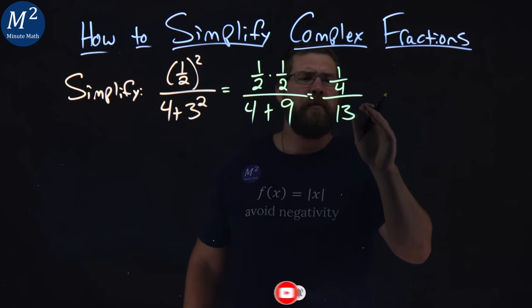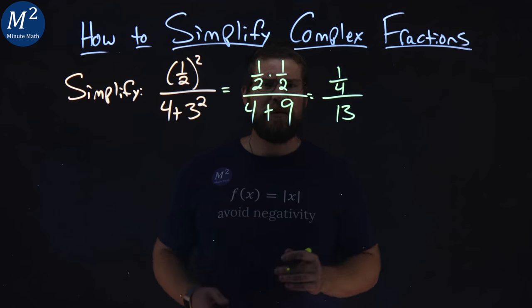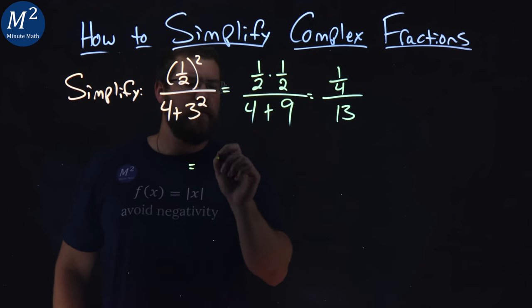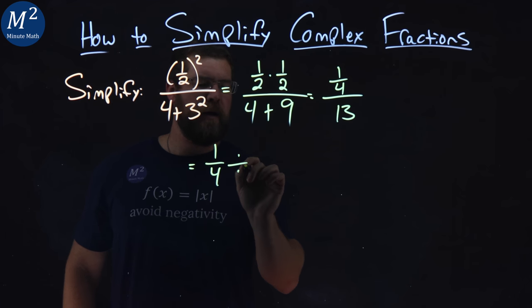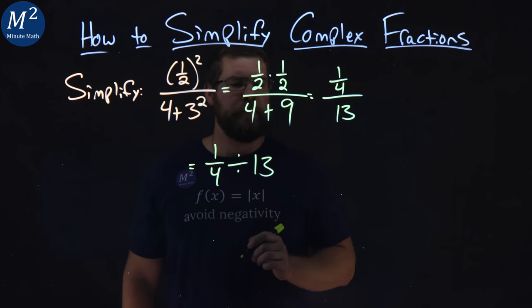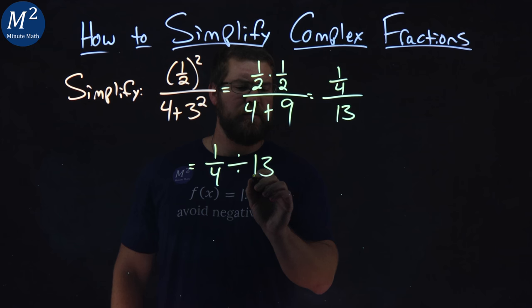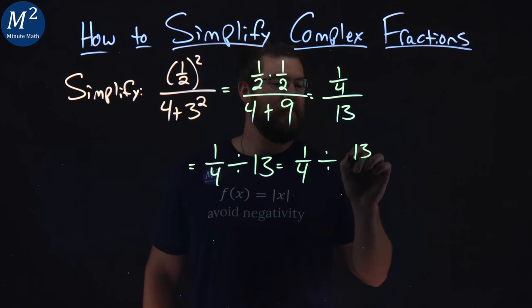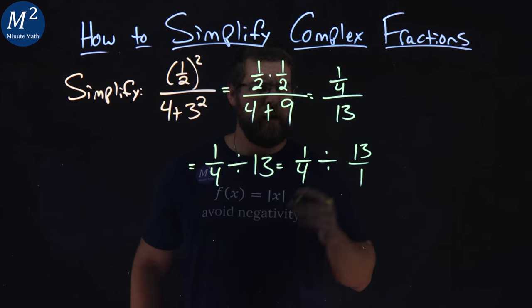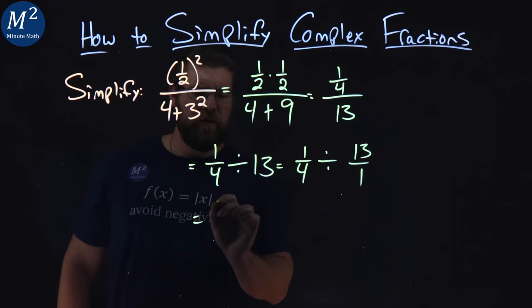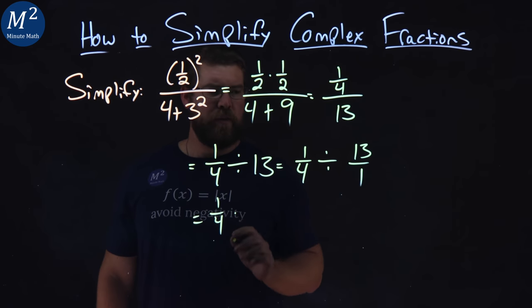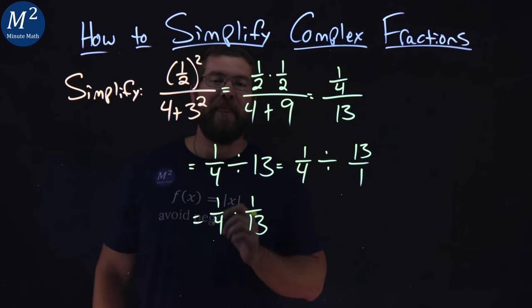All right, now, one fourth divided by 13. This is what tricks a lot of people up. We can rewrite this to be one fourth divided by 13. And 13 as a fraction is 13, well, I'll write it here. One fourth divided by 13 is 13 over 1, which, hopefully you can see, is one fourth, instead of dividing by 13 over 1, is multiplied by 1 over 13, the reciprocal.